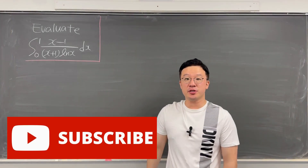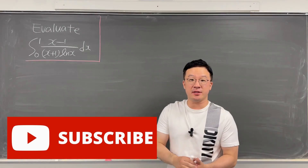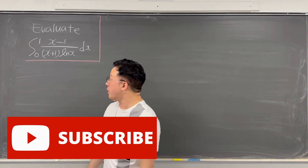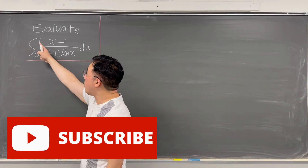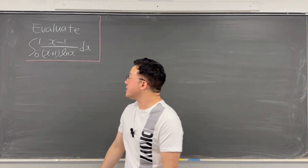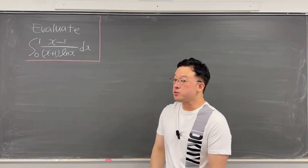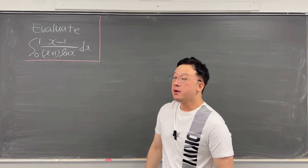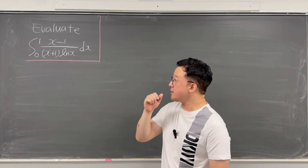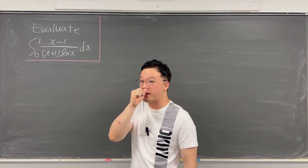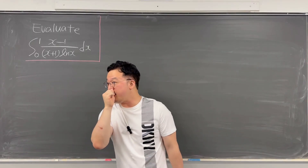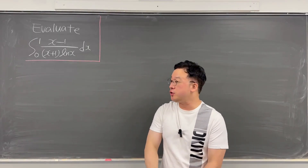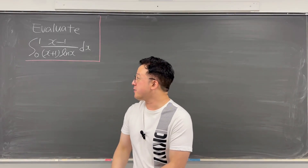Okay, now we have an interesting viewer-suggested integral. The question is: evaluate this integral from 0 to 1 of (x minus 1) over (x plus 1) times ln(x) dx. The tools for this integral are Wallis product and also Euler infinite product.